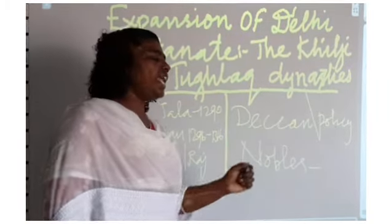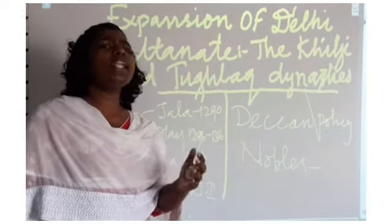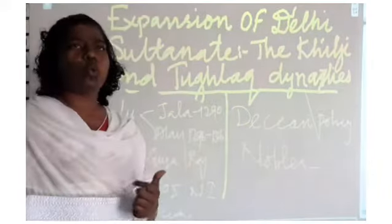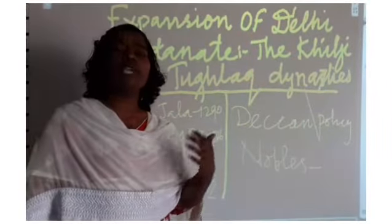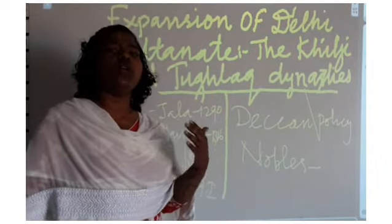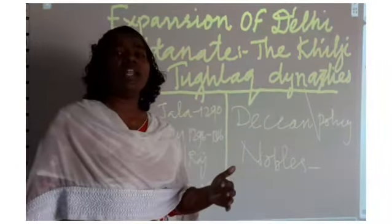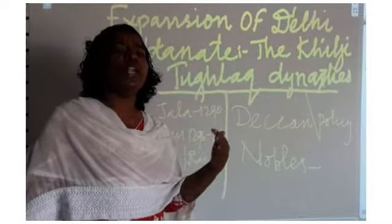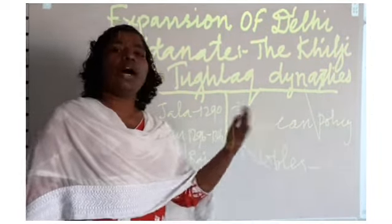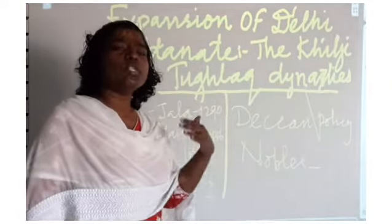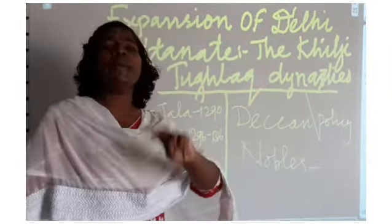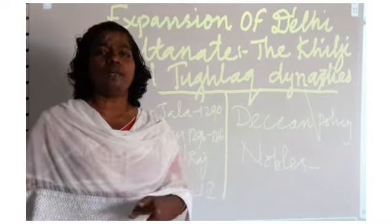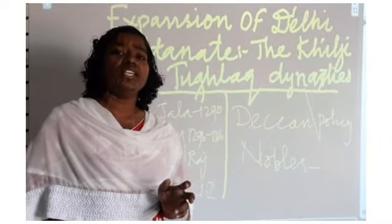Regarding the organization of the army, in order to become a world ruler he needed to maintain a huge army. He used all the wealth and income received from temple plunder and tribute from Deccan rulers for maintaining the army. He followed two important systems: one is Dagh and the other is Chehra. Dagh means the branding of horses.